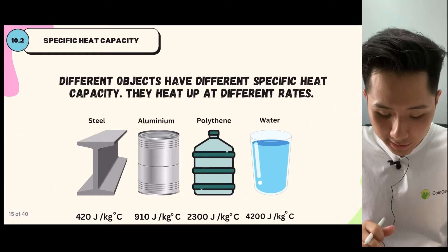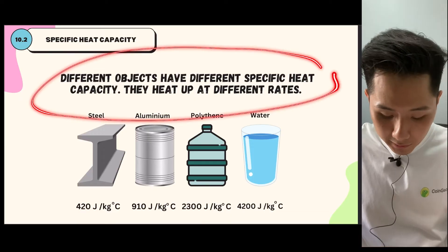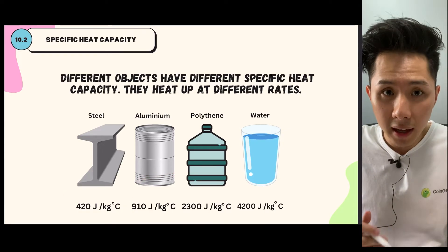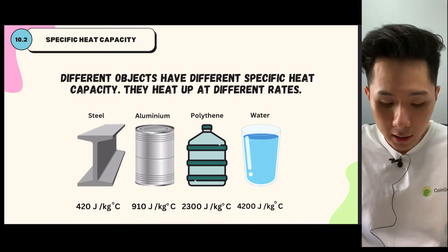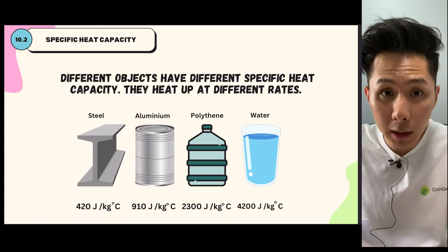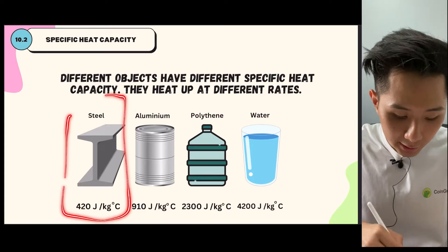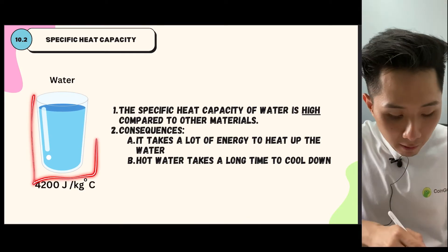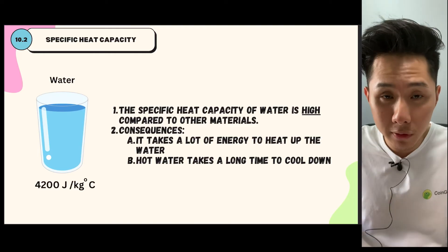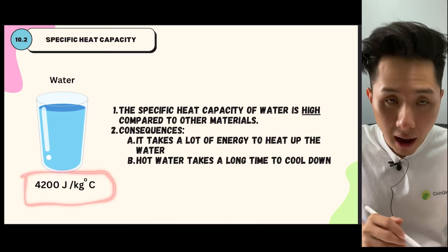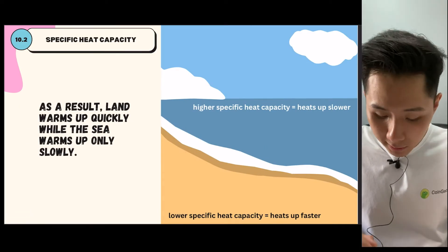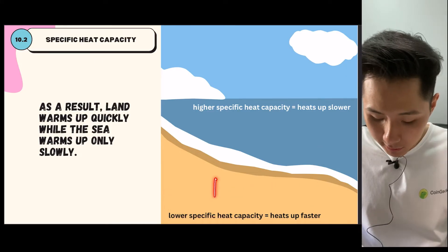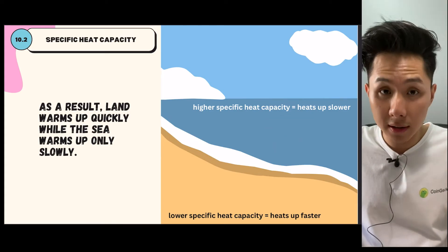Do note that different objects have different specific heat capacity. Steel has about ten times less specific heat capacity compared to water. This means it requires less energy to heat it up as compared to heating water. That's why steel can get hot pretty easily — it has low specific heat capacity. The specific heat capacity of water is high compared to other materials, meaning it's very hard to heat up water, and it would also take a long time to cool down. If you go to the beach, you know that the land heats up faster than the seawater, because the land has lower specific heat capacity, so the sand gets hot very quickly compared to the sea water.